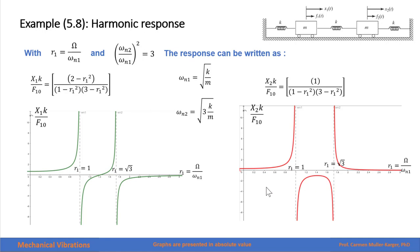This zero-amplitude point is a key aspect in designing what is called a vibration absorber. When we analyze the amplitude of the second mass, we see that for the same frequency at which the first mass had an amplitude of zero, the second mass has an amplitude of finite dimensions. Another important aspect is that the response for both masses goes to infinity when the frequency becomes a natural frequency of the system.